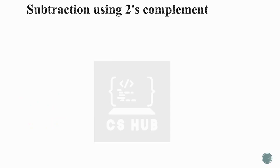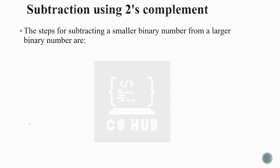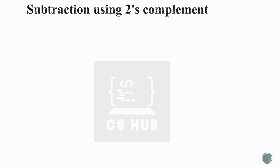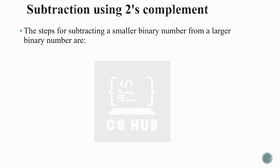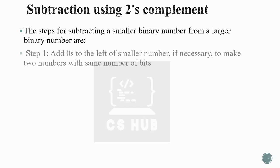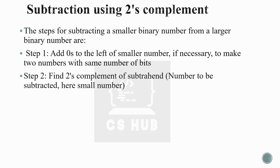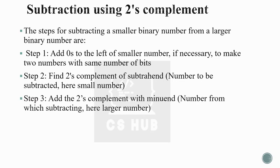Now we look at subtraction using two's complement. The steps are similar to one's complement subtraction: first make the smaller number the same number of bits as the larger by adding zeros to the left, then find the two's complement of the smaller number, and add it to the larger number.